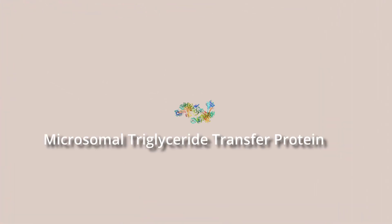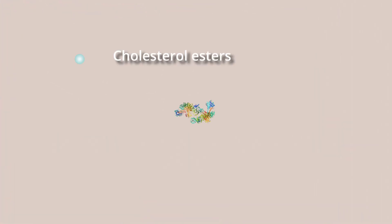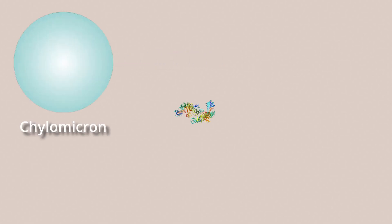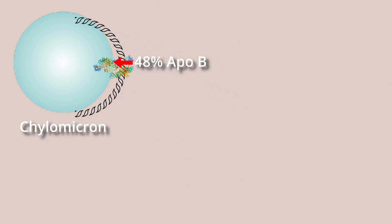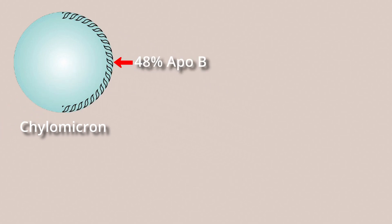With the help of microsomal triglyceride transfer protein, MTP, enterocytes resynthesize lipids and package them into chylomicrons with ApoB48, containing 48% protein coated by the ApoB gene.